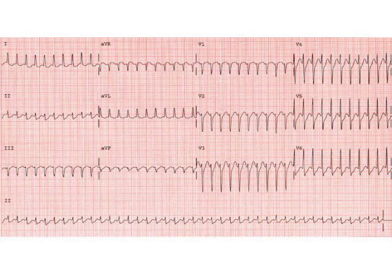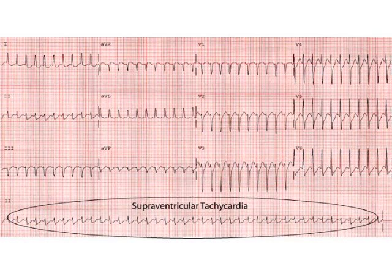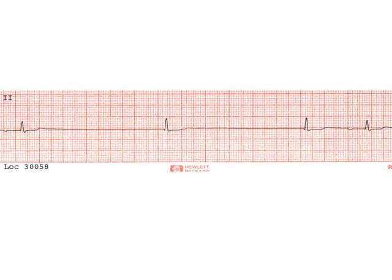The next is a very common rhythm you'll see: supraventricular tachycardia. It's a regular rapid rate and there are no P waves. In the other example, again looking for the pattern, there are no P waves and it's a very slow rhythm. This is called a slow junctional rhythm.